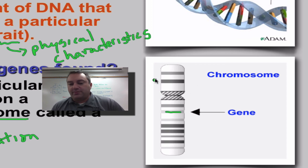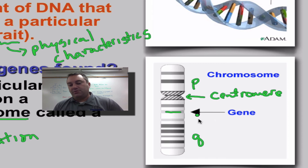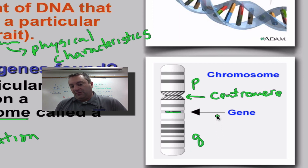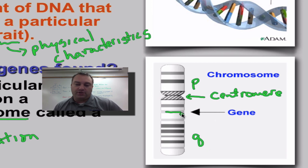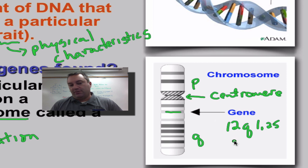A couple of other nomenclature things you want to know about a chromosome: this would be called the P arm and this would be called the Q arm. This area right in here would be the centromere. The P arm is above the centromere and the Q arm is below. These little bands are given numbers, so a gene could be found on, say, chromosome number 12, on the Q arm at location 23. Its address would be something like 12q1.25 — that would be its address. So you would know exactly where this gene is found on which particular chromosome.